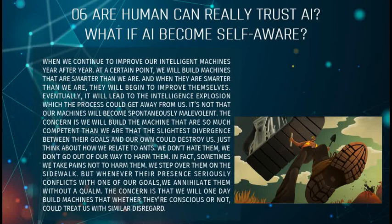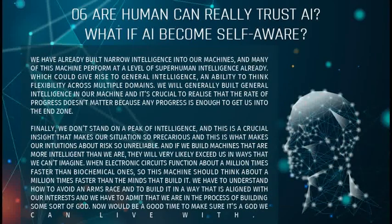Just think about how we relate to ants — we don't hate them, we don't go out of our way to harm them, in fact sometimes we take pains not to harm them and step over them on a sidewalk. But whenever their presence seriously conflicts with one of our goals, we eliminate them without a second thought. The concern is that we will one day build machines that, whether they are conscious or not, could treat us with a similar indifference. We have already built narrow intelligent machines, and many of these machines already perform at the level of superhuman intelligence, which could give rise to general intelligence and the ability to think flexibly across multiple domains.